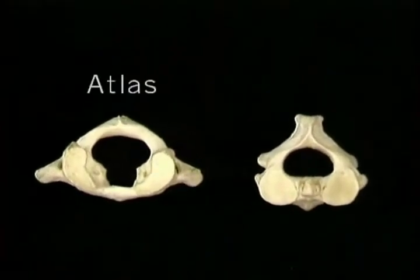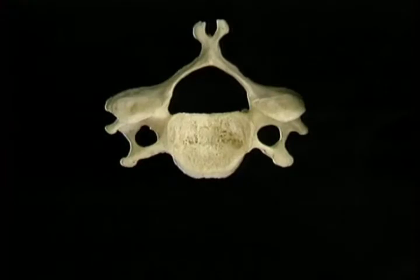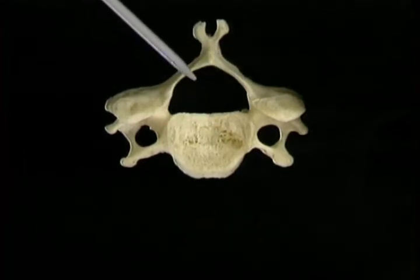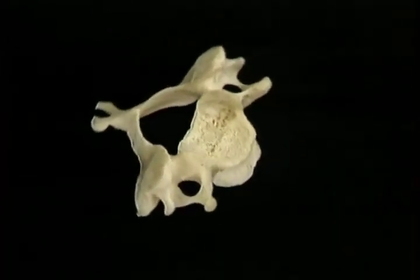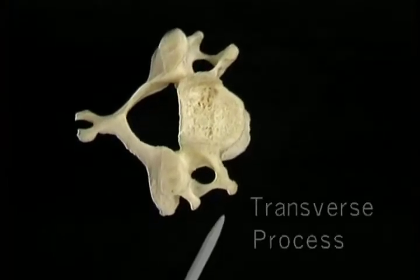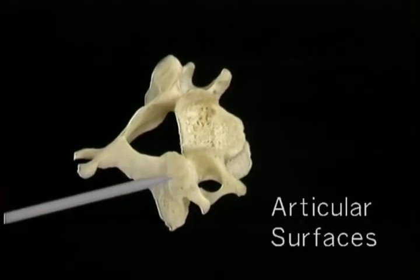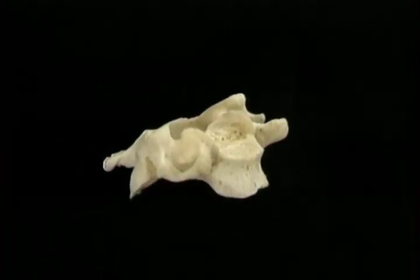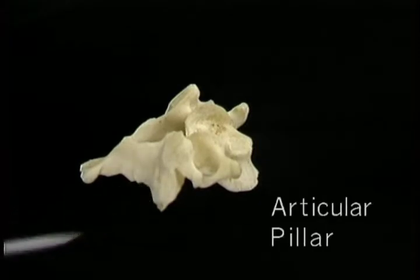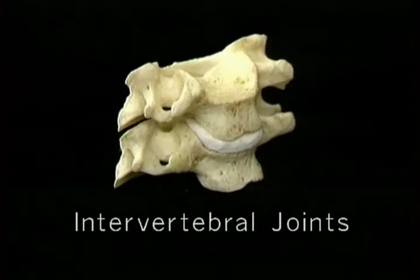Because of their special functions, the atlas and the axis differ in several ways from typical cervical vertebrae. A typical cervical vertebra has a body in front and a neural arch behind, enclosing the vertebral foramen. It has a spinous process behind with two tuberosities, and a transverse process on each side also with two tuberosities. On each side there are two articular surfaces, one above and one below, which form the intervertebral joints. The articular surfaces slope upward and forward, connected by the articular pillar. Each vertebra is joined to its neighbours by an intervertebral disc in front and by two intervertebral joints behind, one on each side.